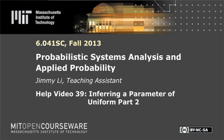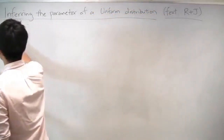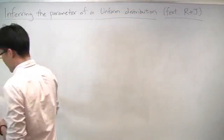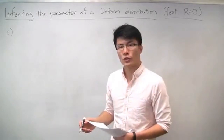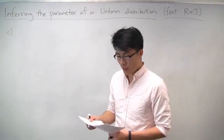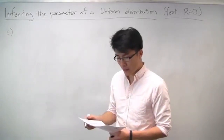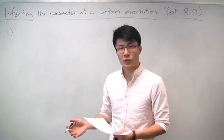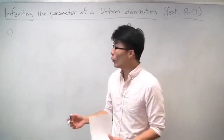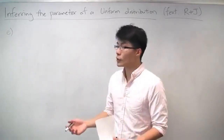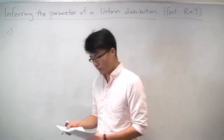Welcome back. Now we're going to finish the rest of this problem. For part E, we've calculated what the MAP and LMS estimators are, and now we're going to calculate what the conditional mean squared error is. It's a way to measure how good these estimators are.